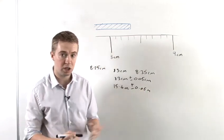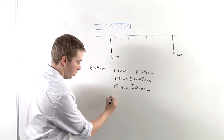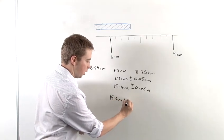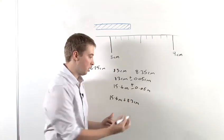So if we were to add those two measurements together, what we would end up with is 15.4 meters plus 8.3 centimeters. And we have to add the uncertainties.